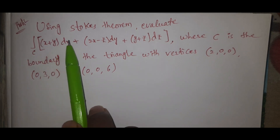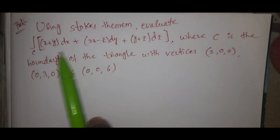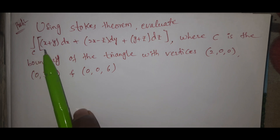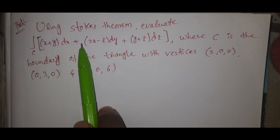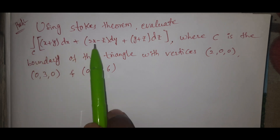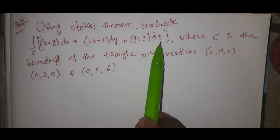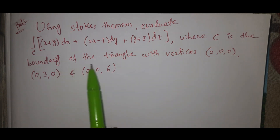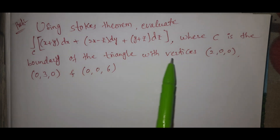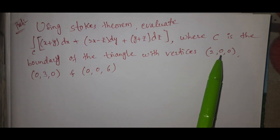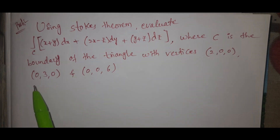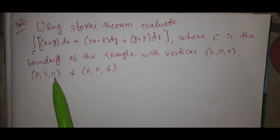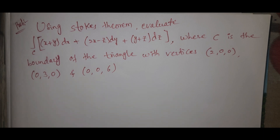Using Stokes theorem, evaluate the integral over C of (x + y)dx + (2x − z)dy + (y + z)dz, where C is the boundary of the triangle with vertices (2, 0, 0), (0, 3, 0), and (0, 0, 6).